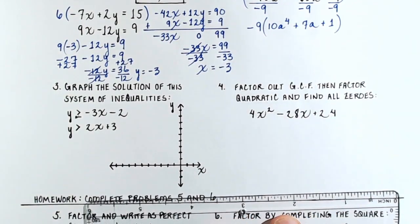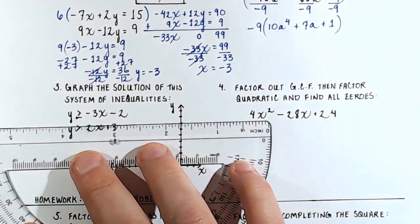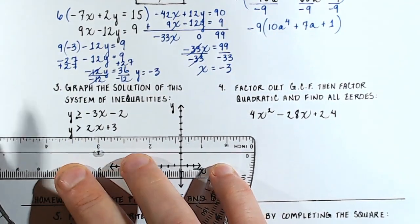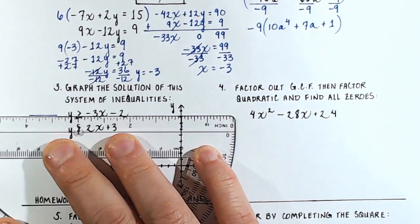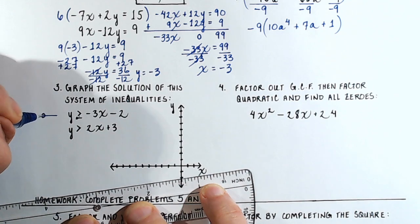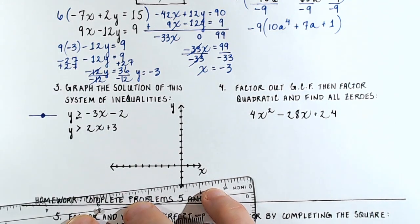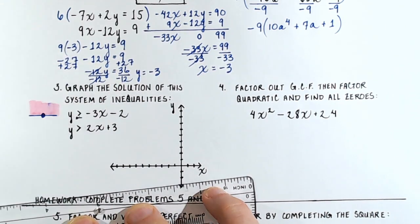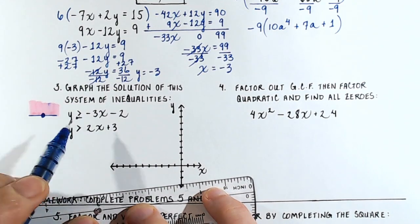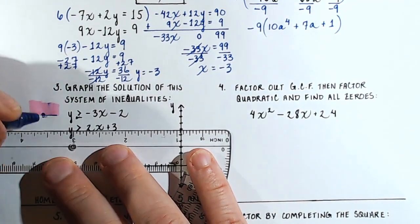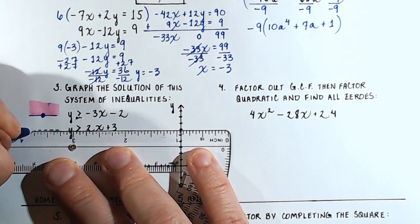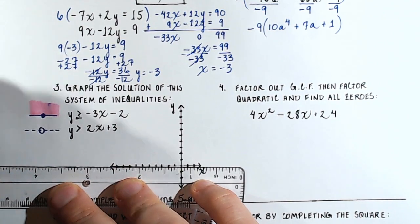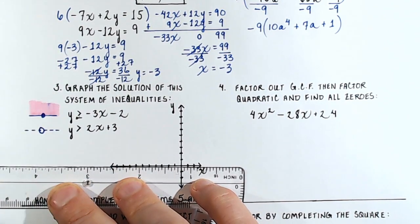Number 3: graph the solution of this system of inequalities. We have to remember a couple of rules. Greater than or equal to implies a solid line with filled-in points, and because it's greater than we shade above that line. For the second inequality, a greater than symbol implies a dashed line with open circles, and we shade above the line.